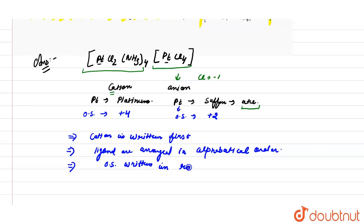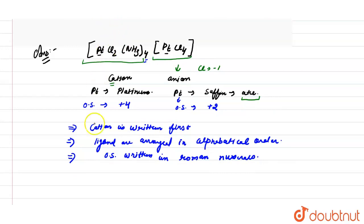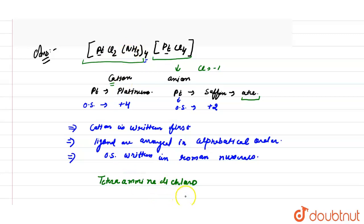The prefix 'tetra' is used to indicate the number of amine and chloro ligands. Following these rules, the compound name begins with 'tetraamine' for the four NH₃ ligands and 'dichloro' for the two Cl ligands. Ligand names are arranged in alphabetical order — so 'dichloro' comes before 'tetraamine' — followed by the central metal atom platinum with oxidation state four.